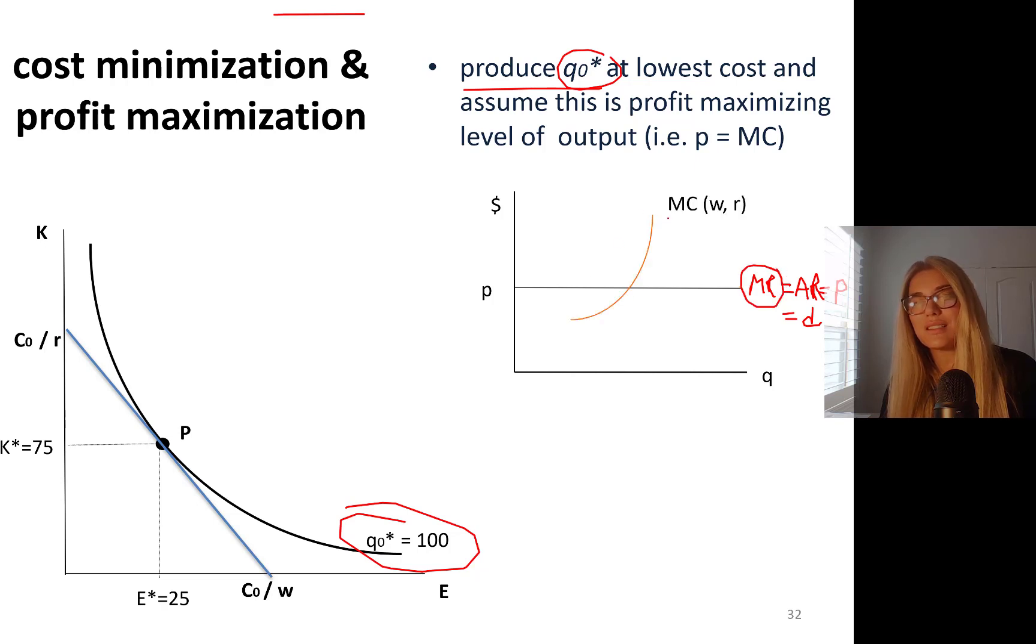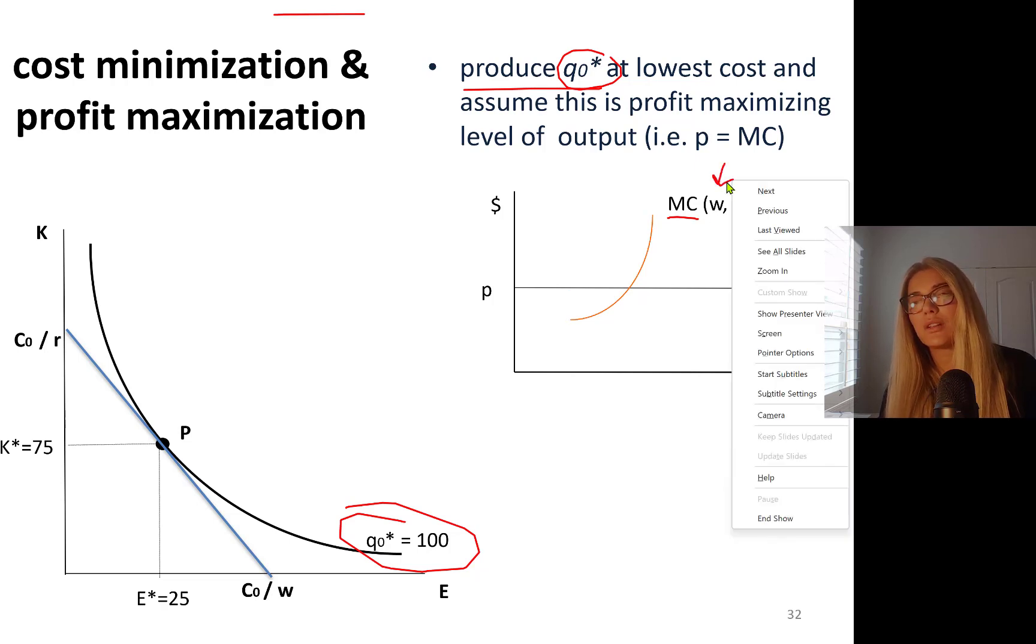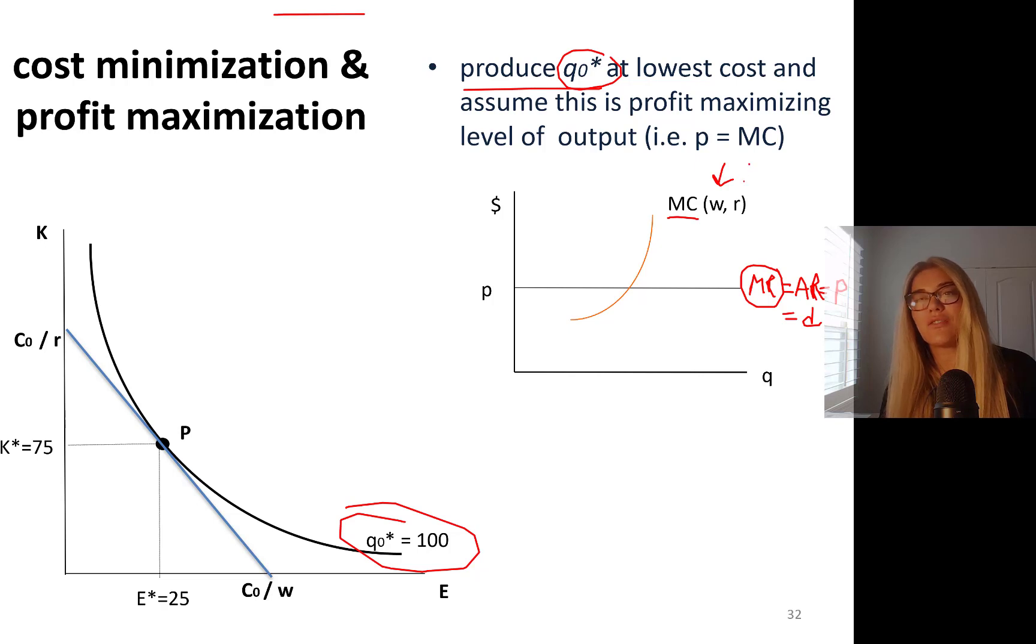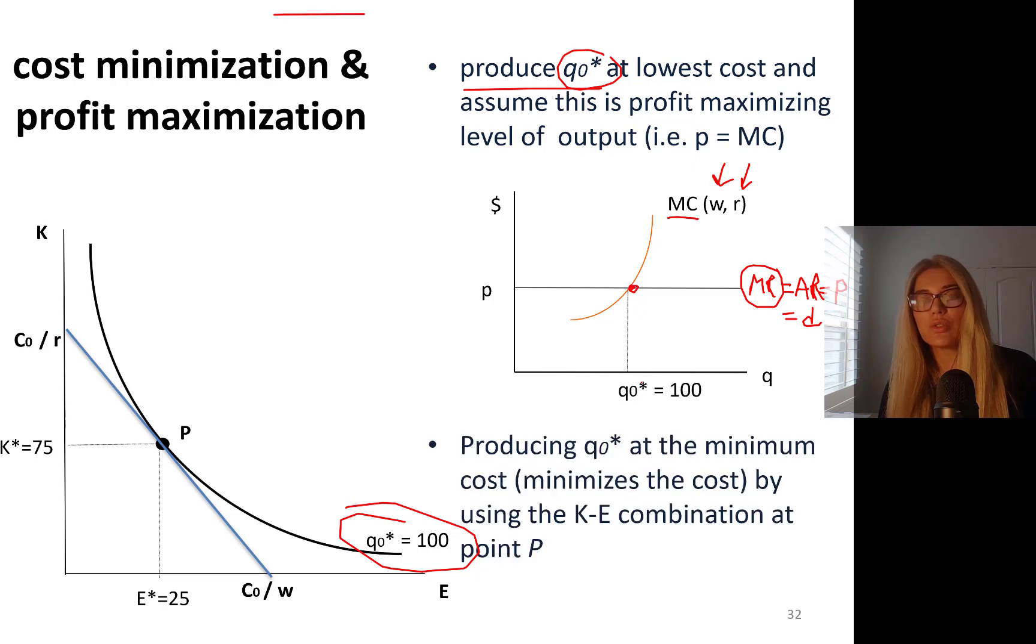What we did was marginal revenue equals marginal cost. Where is marginal cost? Marginal cost looks like this - marginal cost is J-shaped. And marginal cost will depend on the cost generators, right, the wage rate and the rental rate.